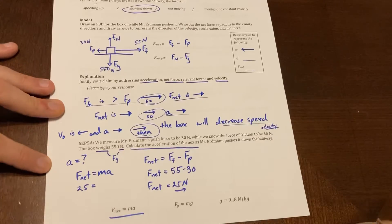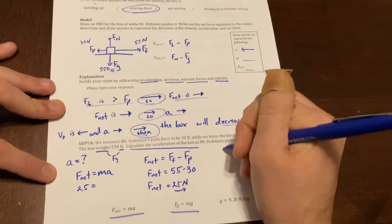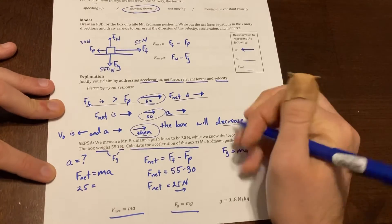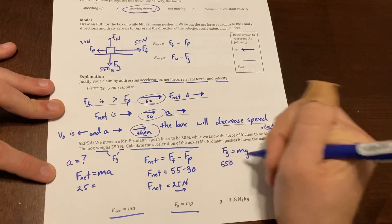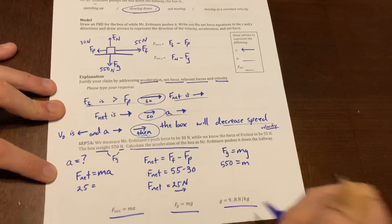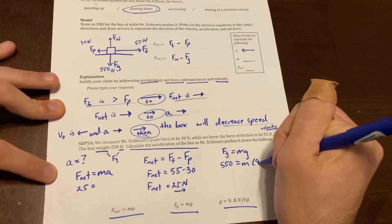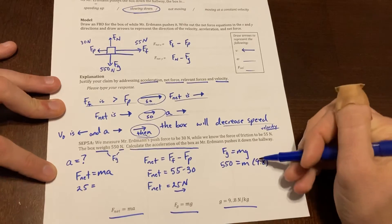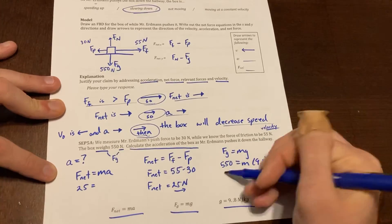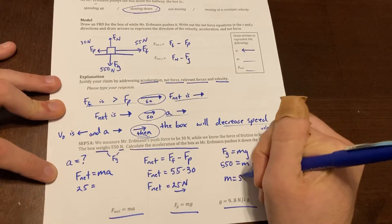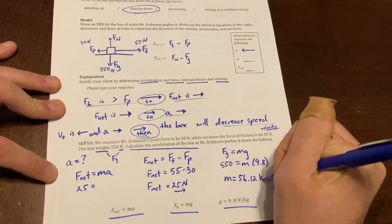Now again, I don't know mass, but I could figure it out using Fg equals mg. Fg is 550 newtons going downwards, and I'm looking for my mass, and g on earth is always that 9.8. Remember, this 9.8 is not the force of gravity, it's the strength of the gravitational field pulling on that mass to give the object weight. So the mass here, when we do the math on it, is 56.12 kilograms.